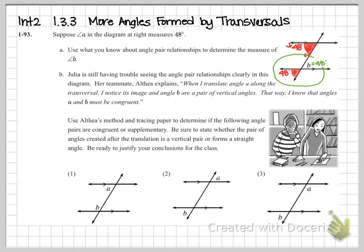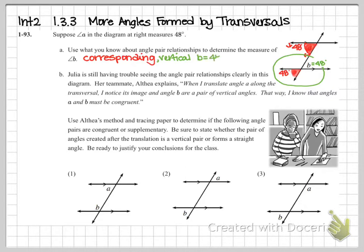Writing out my reasoning: the first step used corresponding angles (coded red), which led into the next reason — vertical angles. So the measure of B equals 48 degrees. When I translate along the line, the image angle and angle B are a pair of vertical angles, meaning angles A and B must be congruent.